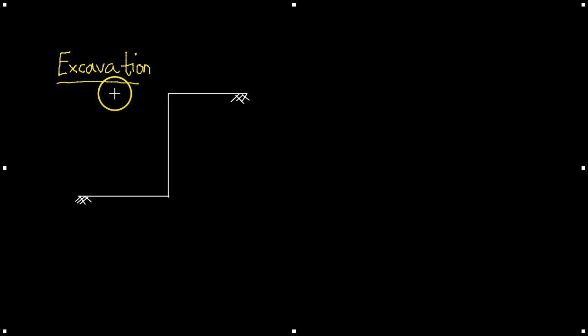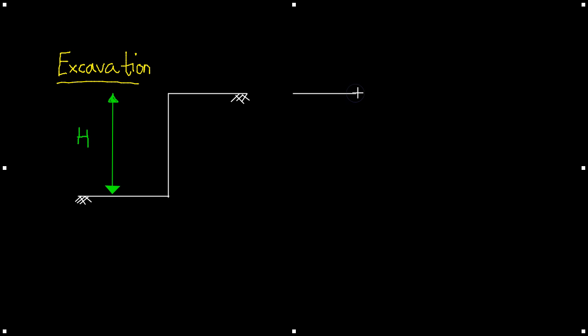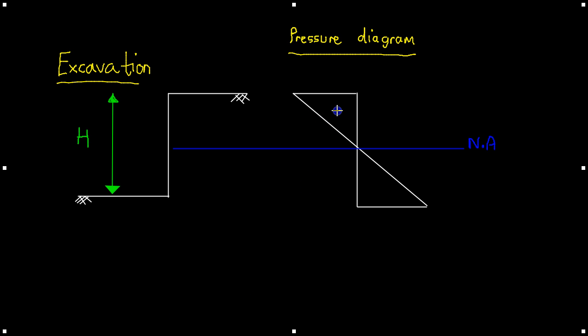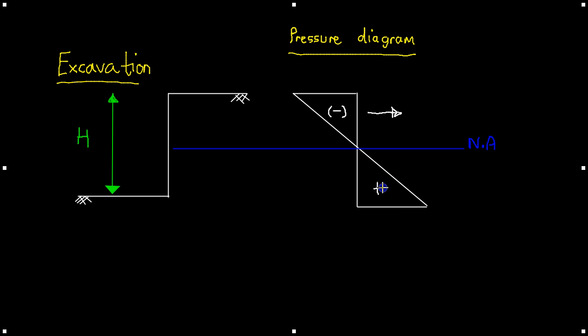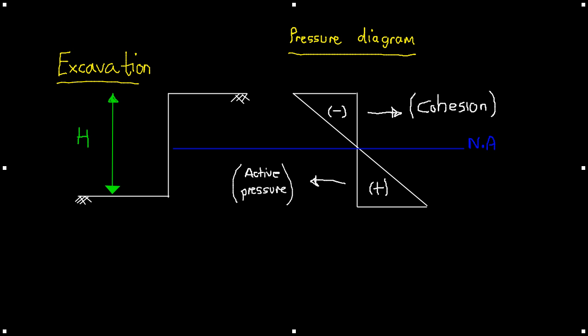Let's draw a diagram so we can see the pressure distribution when we have an excavation. Here we have an excavation in a saturated clay, and we'll call H the height of the excavation. We have a neutral axis where the pressure is zero. At the top we have a negative pressure which pulls the excavation back — stopping it falling in — due to the cohesion present in the soil. At the bottom we have a positive pressure trying to push the excavation in, due to the active pressure in the clay caused by the weight of soil above creating a horizontal pressure.